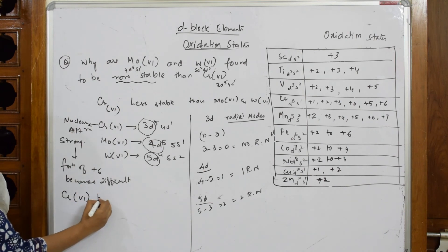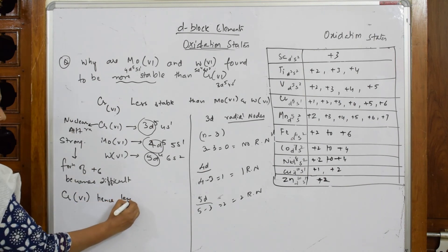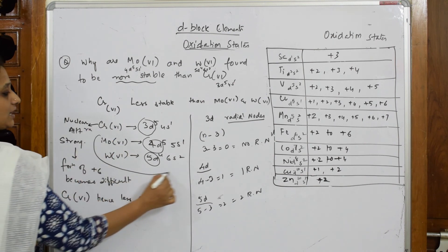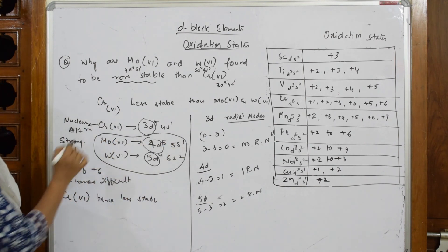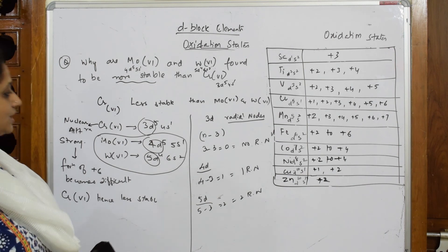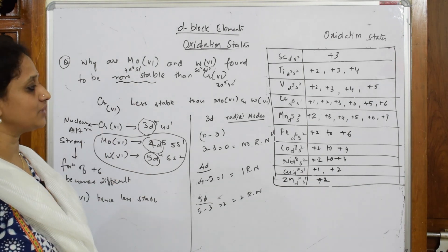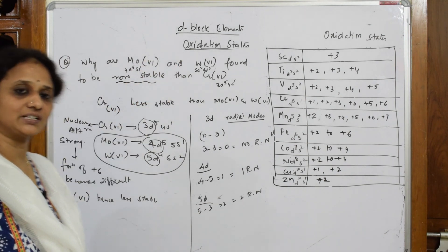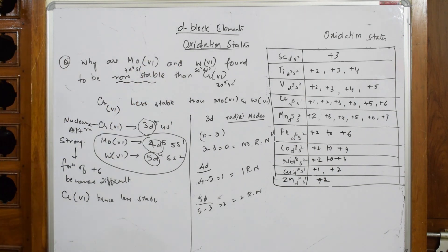it is less stable, hence less stable. But when I compare these two, molybdenum and tungsten, they have radial nodes and they are not so close to the nucleus. They can easily donate those 6 electrons from the outer configuration and form a +6 oxidation state.